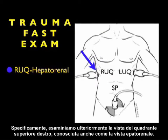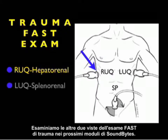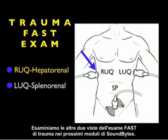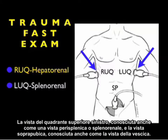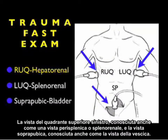Specifically, we're going to look further into the right upper quadrant view, also known as the hepatorenal view. We're going to cover the two other views of the trauma fast exam in upcoming modules of SoundBytes: the left upper quadrant view, also known as the splenorenal or perisplenic view, and the suprapubic view, also known as the bladder view.